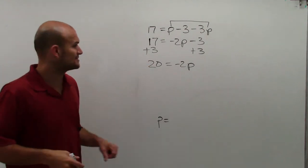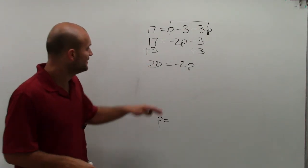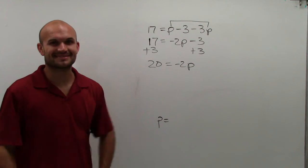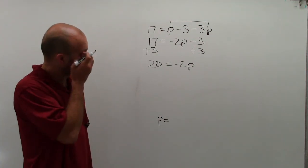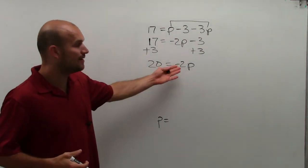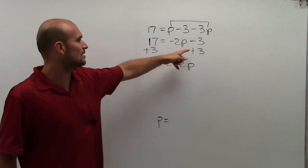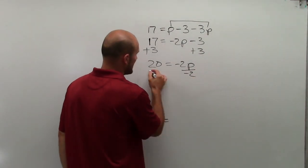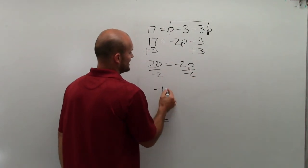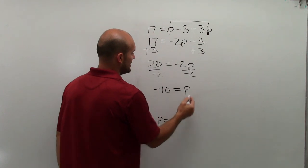20 equals negative 2p. My Espanol Spanish is horrible. But sometimes I really like to say it, so I just kind of go with the flow, the ebb and flow. 20 equals negative 2p. Now I use the inverse operation of multiplying by negative 2, so I divide by negative 2. And therefore, I get negative 10 equals p.